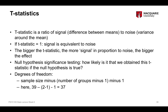We also need degrees of freedom, just as we did for the one-sample t-test. For the independent samples t-test, degrees of freedom is calculated as total sample size minus the number of groups minus 1, minus 1 again. In this instance our total sample size is 39, minus 2 groups minus 1, minus 1 again — so 39 minus 2 gives us 37 degrees of freedom.